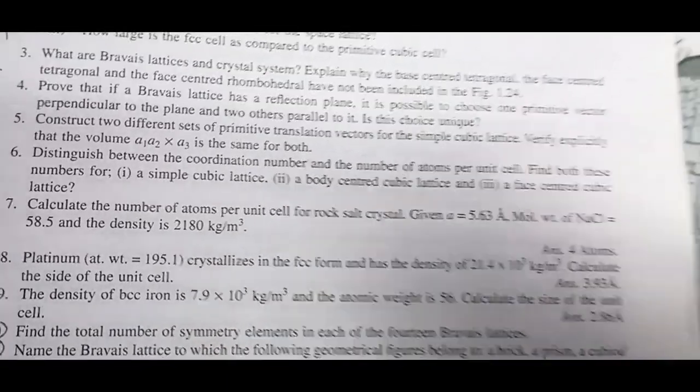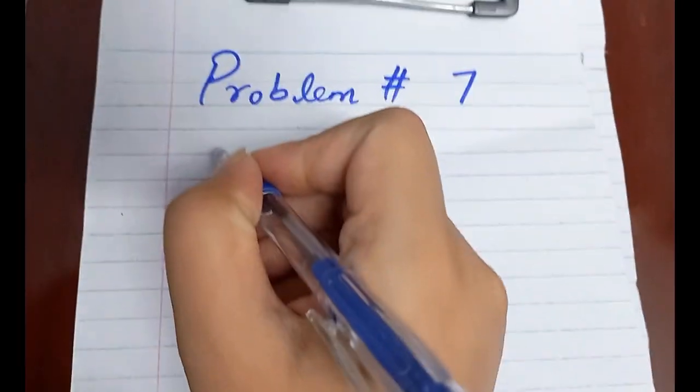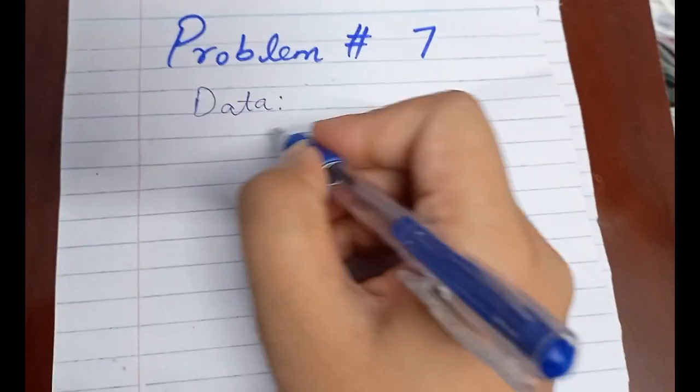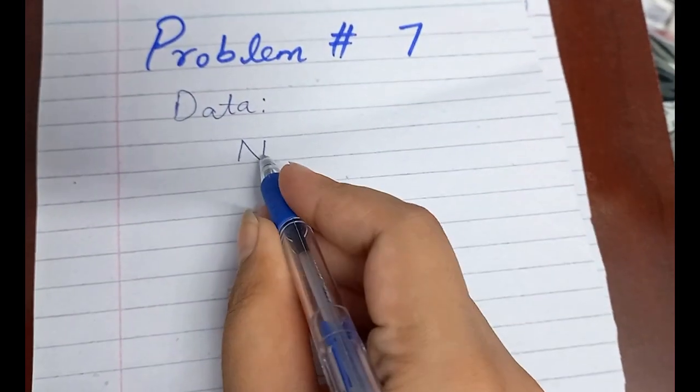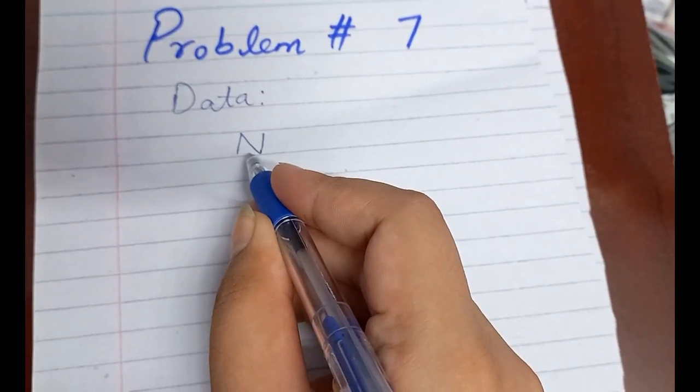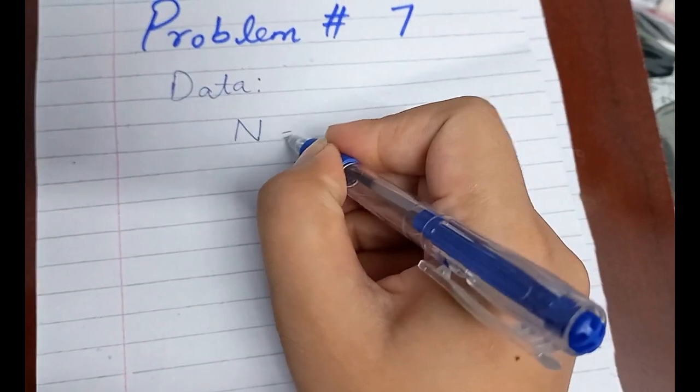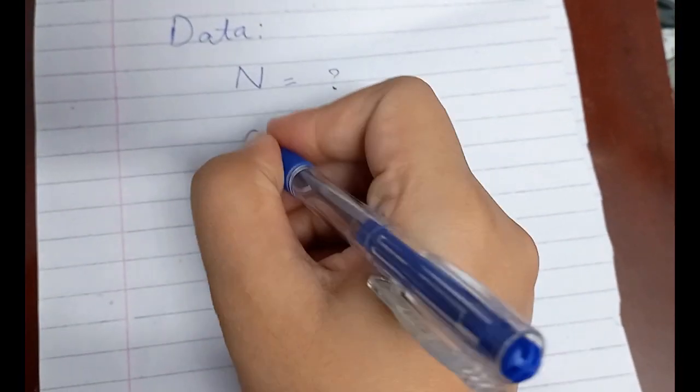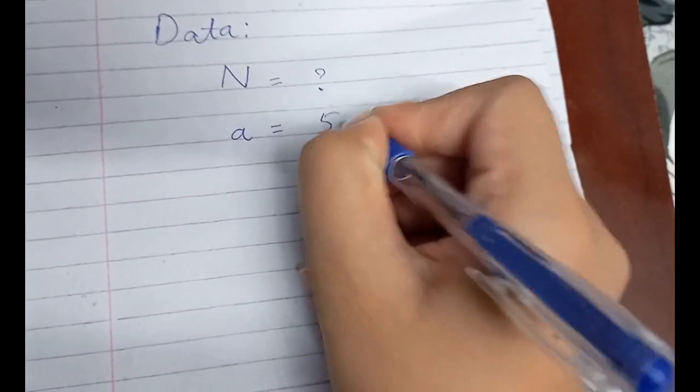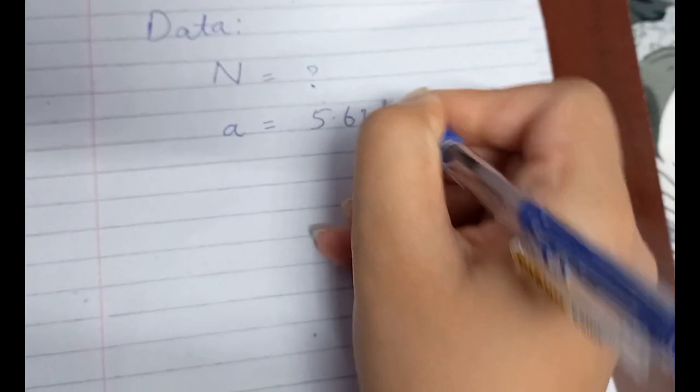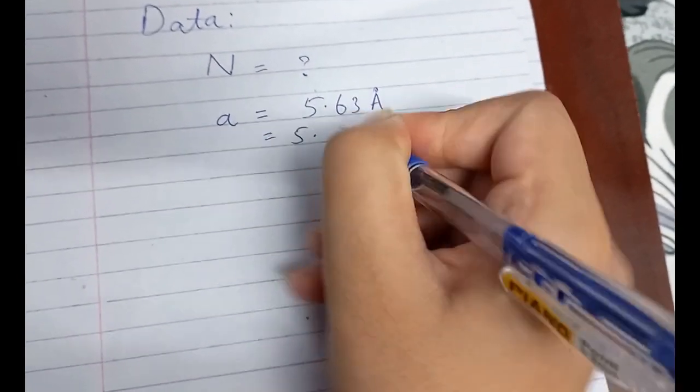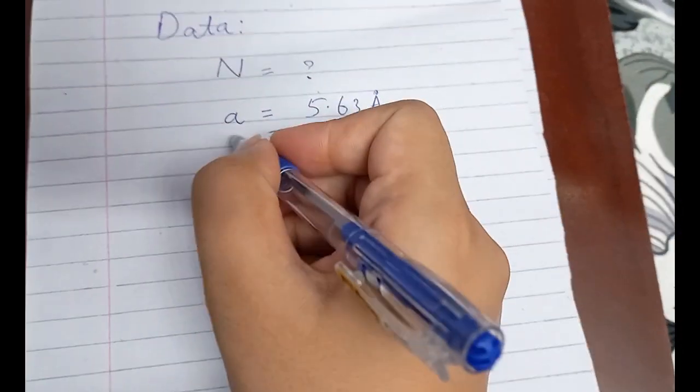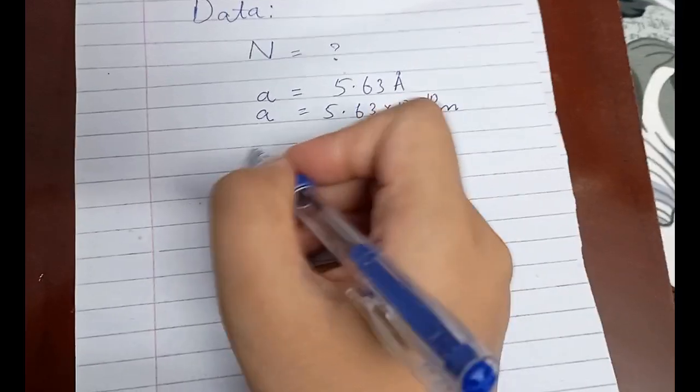First we'll write our data. We need to find out the number of atoms per unit cell that we denote by capital N letter. We are given the lattice parameter which is a equals 5.63 angstrom, and angstrom equals 10 to the power minus 10 meter. We need to put it right here in the data part so it may become easy for us to put the direct values.